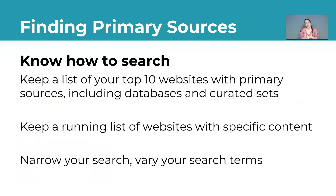A few tips on how to search: number one, keep a list of your top 10 websites you go to for primary sources, including databases such as the Library of Congress and curated sets. You can also keep a running list of websites with specific content — I have a Google Doc where I keep all of my favorites. And finally, narrow your search and vary your search terms as much as possible. If you know the exact year or exact geographic location, start there to be as specific as possible.